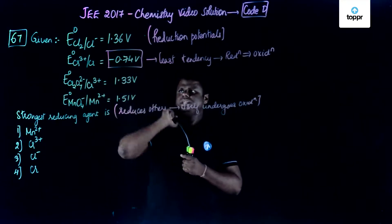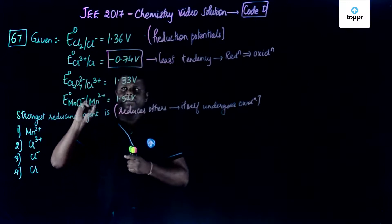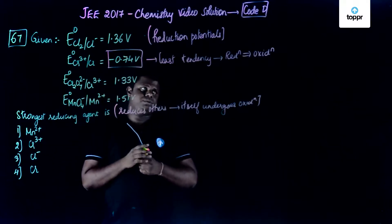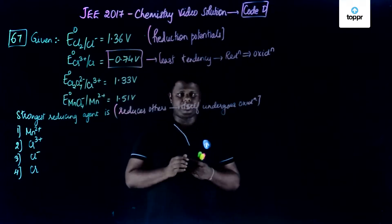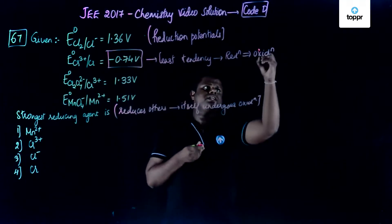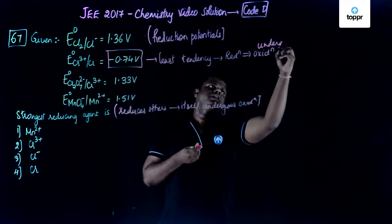So chromium in this case, it has the low standard reduction potential. So it has the least tendency to undergo reduction. That means it undergoes oxidation. So that means it is a good reducing agent.